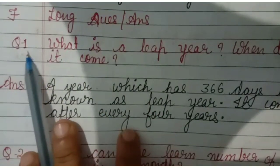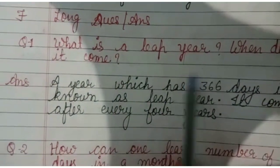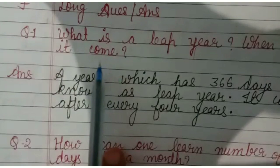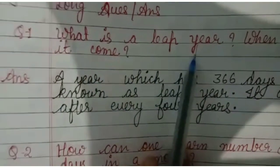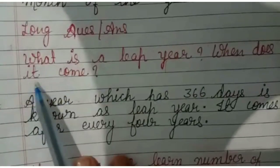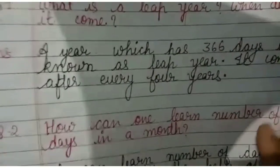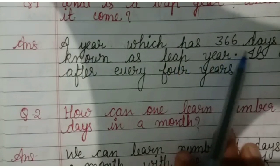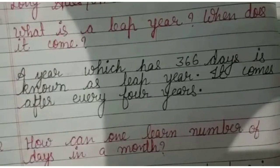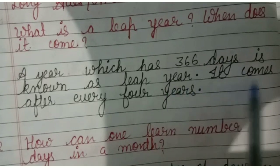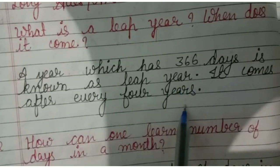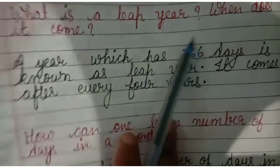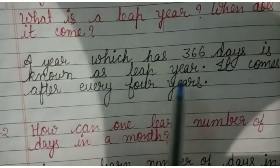Exercise F — Long answer questions. Question 1: What is a leap year? When does it come? Answer: A year which has 366 days is known as a leap year. It comes after every four years.